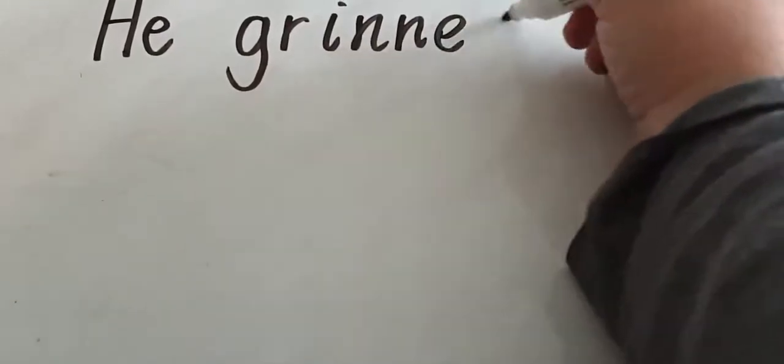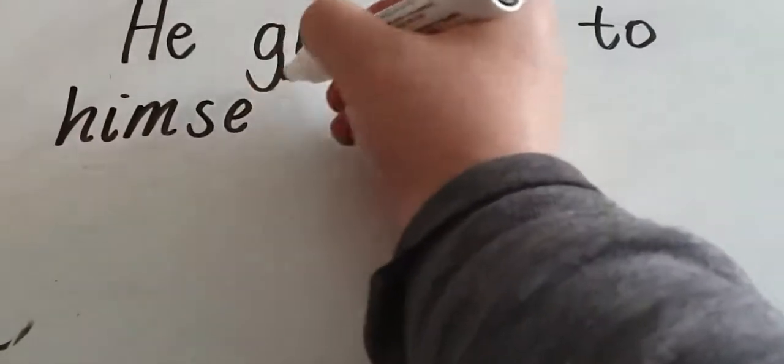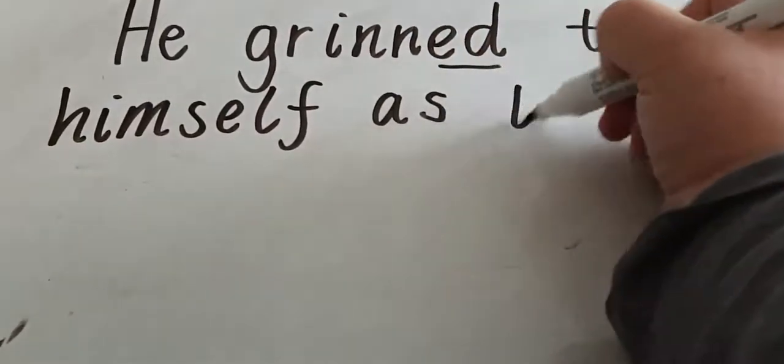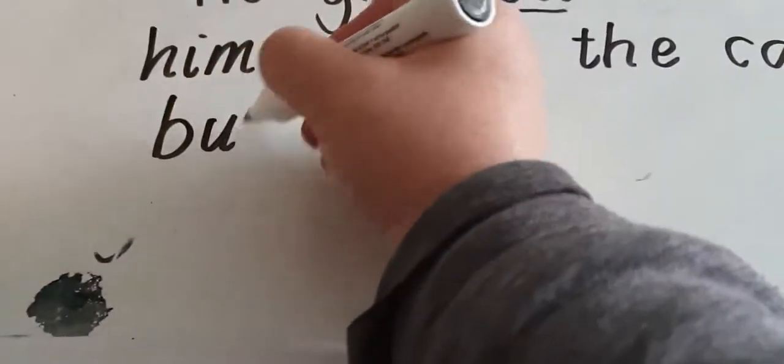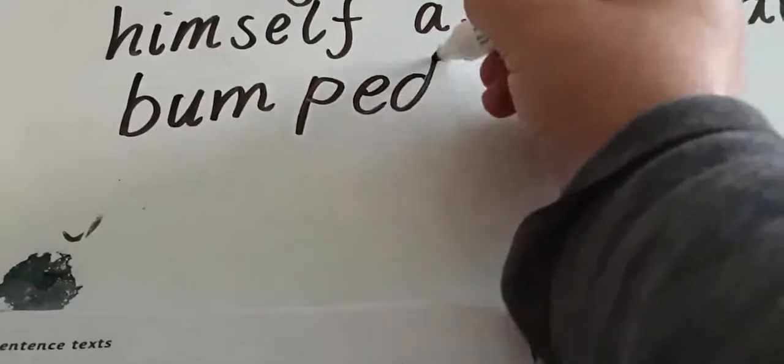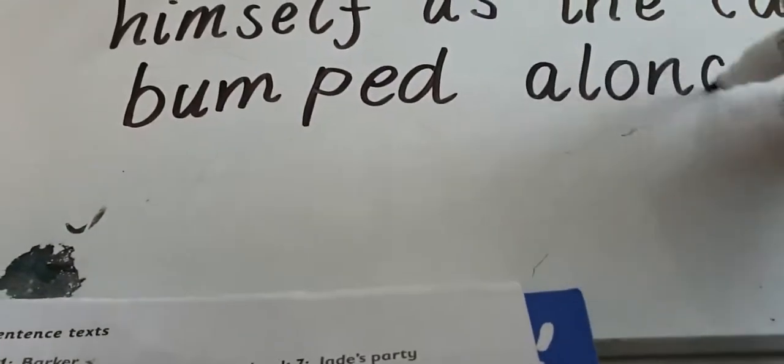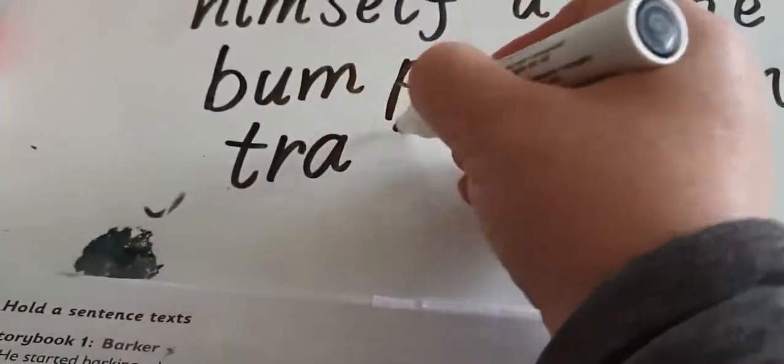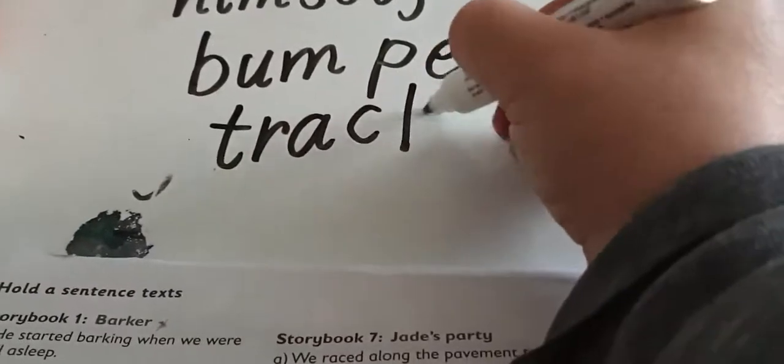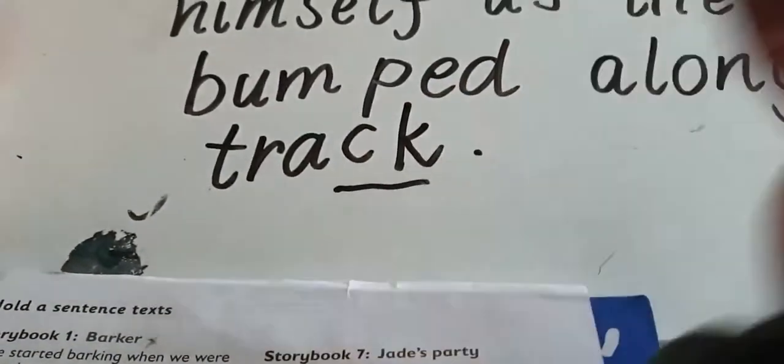Let's have a look at that one. Capital letter at the start. He grinned, and grinned has got two N's. He grinned, and it's that ending again. He grinned to himself as the cart bumped along the track. And you should have a full stop at the end.